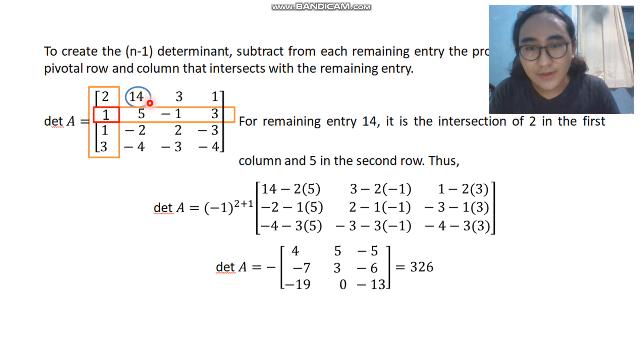So 14, we're going to write down 14 here. We're going to subtract it by the numbers it intersects with in the crossed out column and row. So here we have 2, here we have 5. So 14 minus 2 times 5. I hope that's clear. Here's another example.